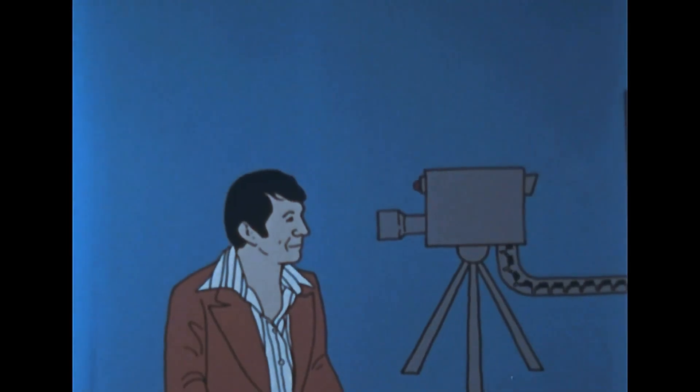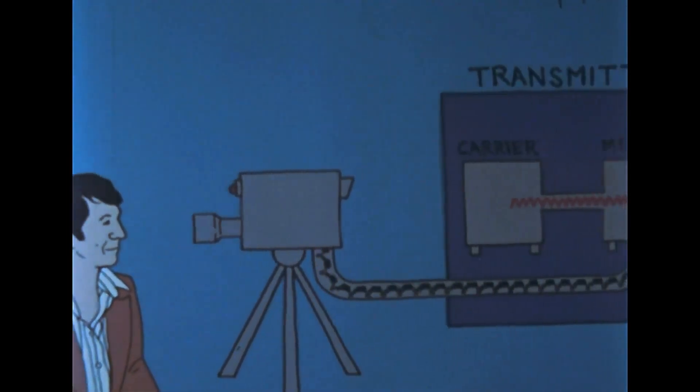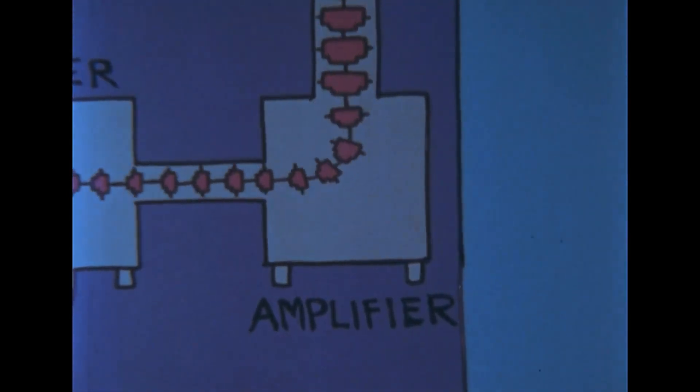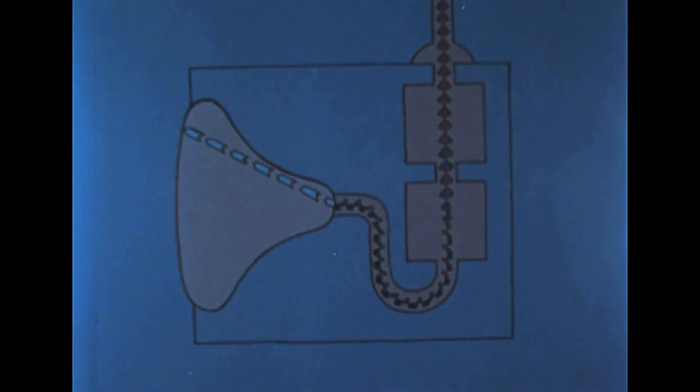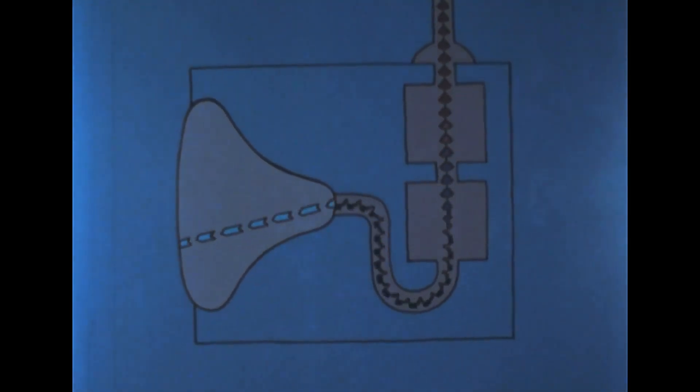But how does the television picture get from the station to your set at home? Let's go back to the video signal. It is brought to a transmitter. Inside the transmitter, an electric current is being generated which has the frequency that fits the channel assigned to the television station. This is called a carrier frequency. The carrier frequency and the video signal are mixed. The result is RF — radio frequency signal — which has both the frequency of the station and the changes in voltage of the video signal. The RF signal is amplified until it is powerful enough to radiate from the transmitter antenna into the atmosphere. The antenna of your television set picks up the RF and reduces it back to the video signal, which produces the picture.